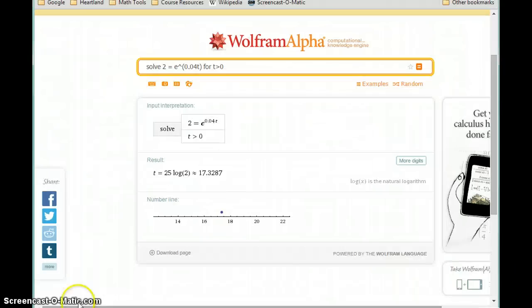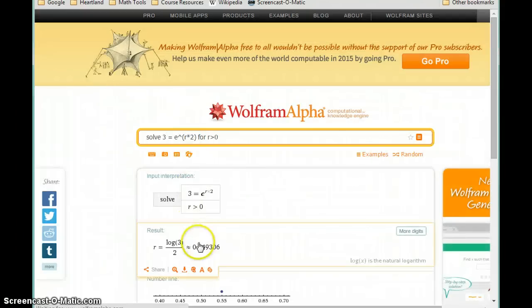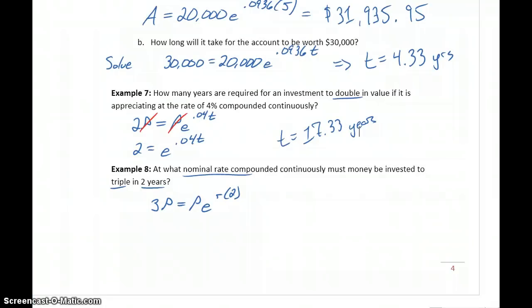And then similarly for our last example, we could change this to 3 equals e to the r times 2. And we'll change the domain to say that r has to be greater than 0, since that interest rate has to be something positive, to get an interest rate of 0.5493 or 54.9%.